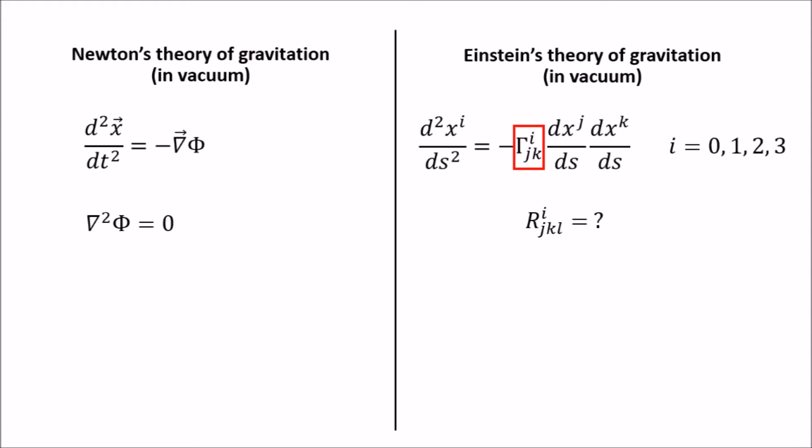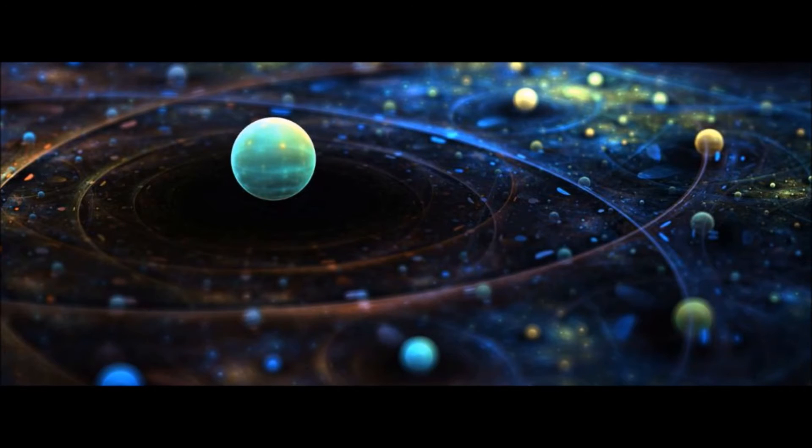To answer this question took Einstein seven years. At one point he had the right answer, but an error in one of his calculations made him dismiss it, and it took him a while to realize he had the right answer all along. Okay, so what is the right answer? We already know that without mass there is no gravity, and hence no curvature of spacetime.